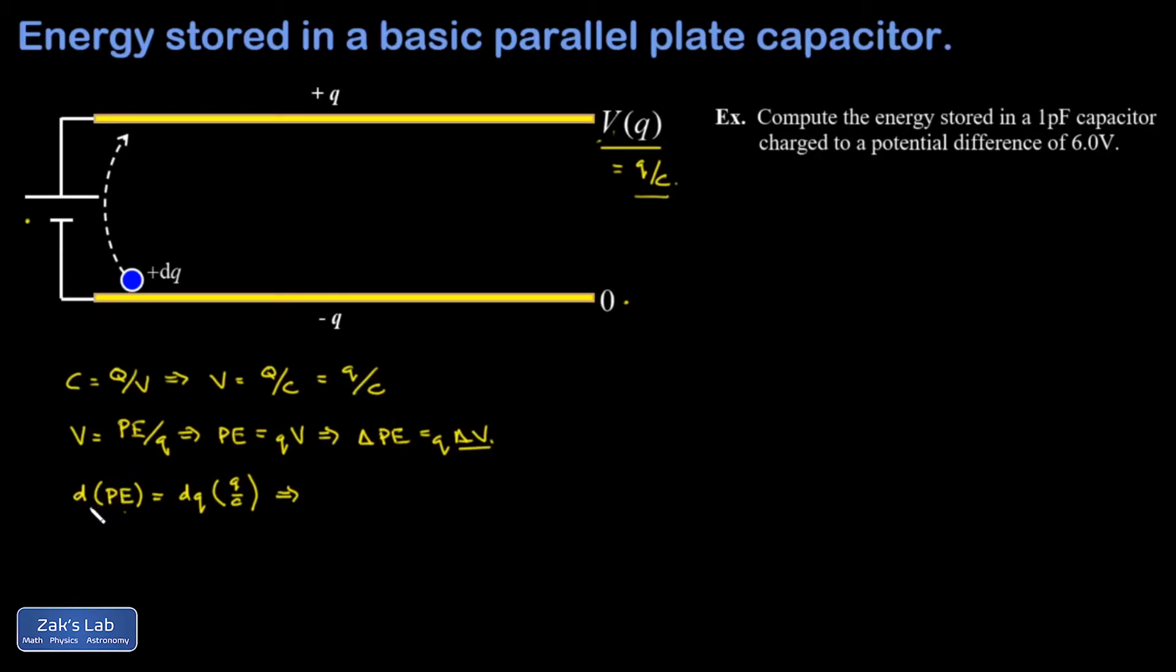So, now I want to add up all of these little potential energy contributions, all the way from my first little dq to the last one. And I have to have some final charge that I'm going to here, and I'm going to use a capital Q for that. My total potential energy is going to be the sum of all the little contributions to potential energy. This is what an integral does. It's really just a continuous sum. And that's the integral of q over c, dq. As I go all the way from my original charge of 0 to my final charge that I chose to call capital Q.